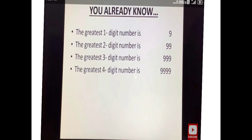You already know the greatest one digit number is 9, the greatest two digit number is 99, the greatest three digit number is 999, and the greatest four digit number is 9999.